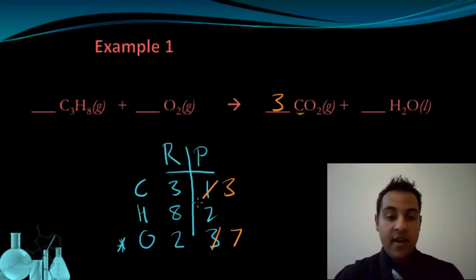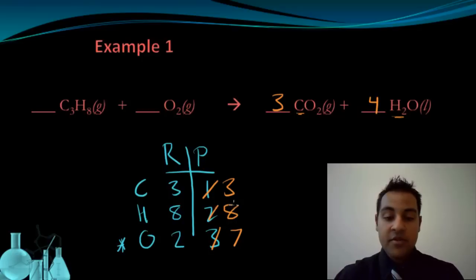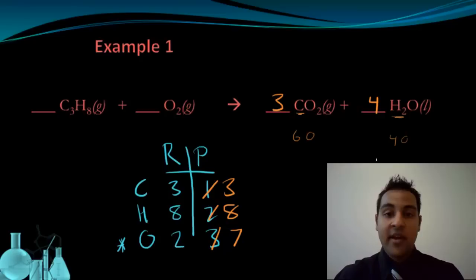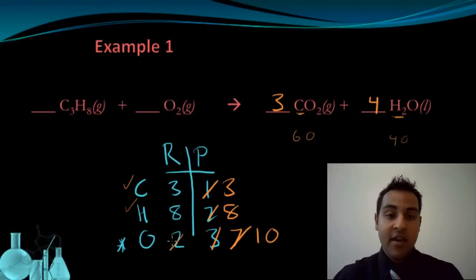Now I have hydrogen left, so I need to balance that. I have eight hydrogens on the left side and two on the right side. To make both sides have eight atoms, I need to multiply the water by four — that will get me eight hydrogens, and now the hydrogens are balanced. Multiplying the water by four also changes the number of oxygens: I now have four oxygens from the water and six from the carbon dioxide, so I have a total of ten oxygens on the product side. Ten on the right and two on the left means I need to multiply the reactant side oxygens by five. And now this equation is balanced.